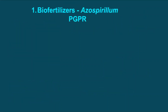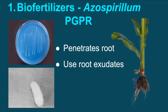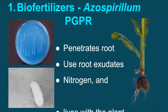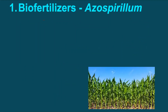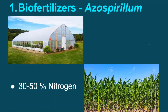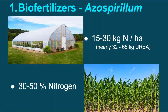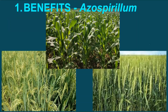Azospirillum is known as plant growth-promoting rhizobacteria. It penetrates into the roots, utilizes the root exudates, atmospheric nitrogen, etc., for its growth and multiplication, and lives in harmony with the plants. Azospirillum is beneficial for crops grown in the greenhouse as well as in open fields. It converts atmospheric nitrogen into ammonia and provides 30–50% of the nitrogen requirement of crops, saving 15–30 kg nitrogen per hectare, equivalent to 32–65 kg urea per hectare. As per field experience, azospirillum has a beneficial effect on a range of crops.